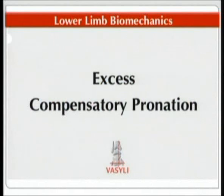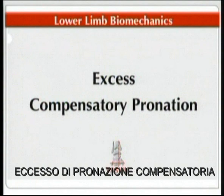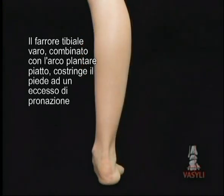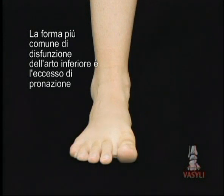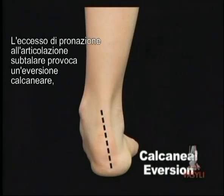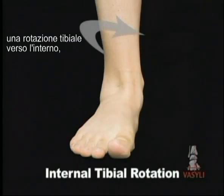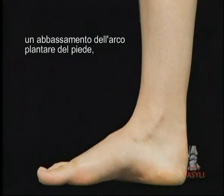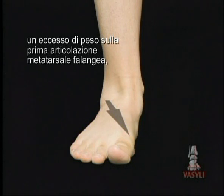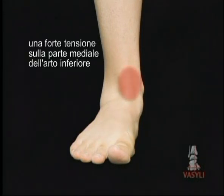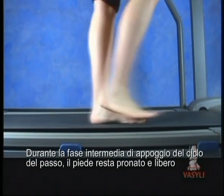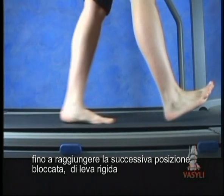Excess compensatory pronation. The tibial varum factor combined with the hard flat unnatural surfaces we walk on daily causes the feet to pronate excessively. The most common form of lower limb biomechanical dysfunction is excess pronation. Excess pronation at the subtalar joint commonly exhibits calcaneal eversion, internal tibial rotation, lowering and elongation of the arch structure, excess weight bearing over the first metatarsophalangeal joint, and excess medial lower limb strain. During the mid stance phase the foot remains pronated and unlocked instead of re-supinating to a locked position, turning the foot into a rigid lever.